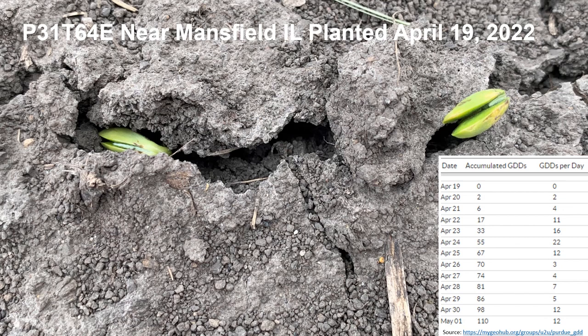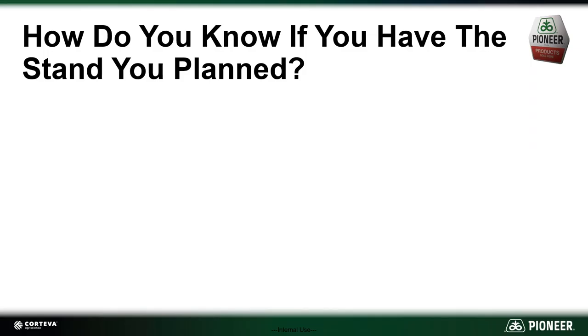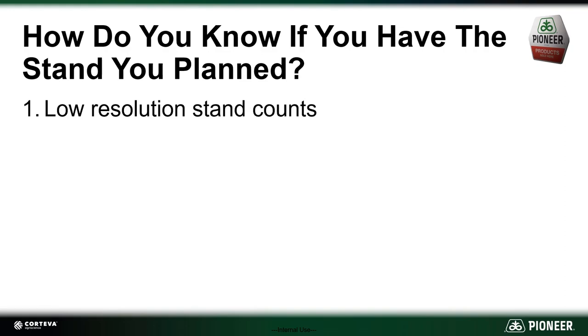Soybeans typically need around 130 growing degree days to emerge. This soybean field near Mansfield was planted on April 19th and started to emerge 13 days later on May 2nd. Once the crop emerges, how do you know if you have the stand you planned?